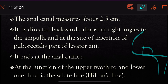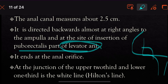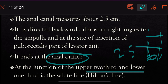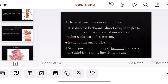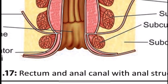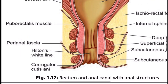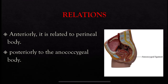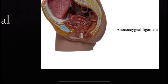At the site of insertion, we have the levator ani muscle. The anal canal ends in the form of the anal orifice. The puborectalis muscle is situated at the junction. Anteriorly, the anal canal is related to the perineal body, and posteriorly, we have the anococcygeal body.